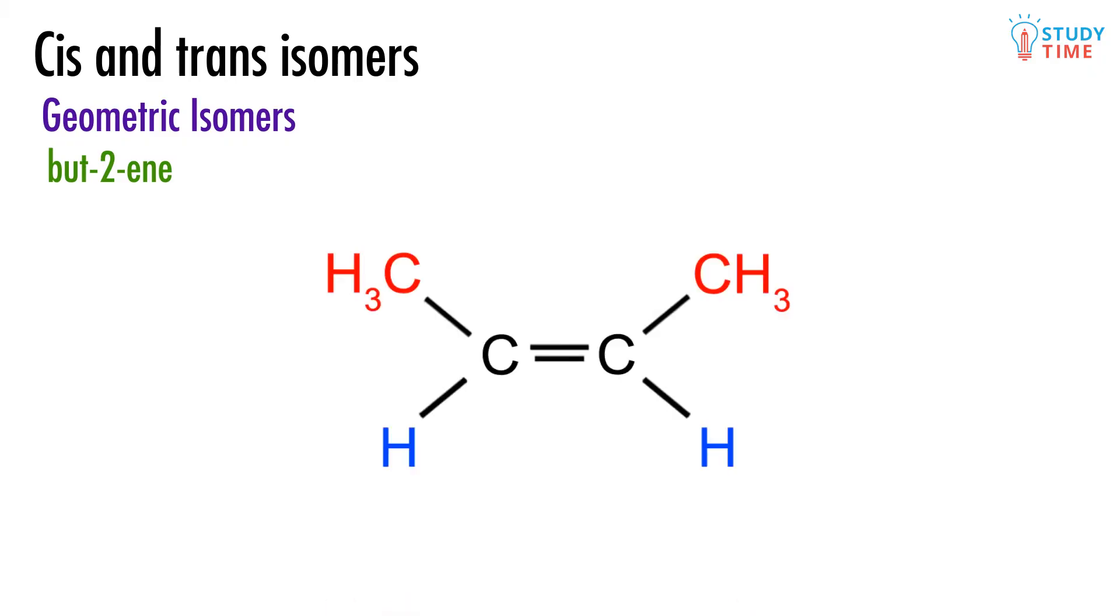One isomer cannot simply twist to become the other because there isn't free rotation about the double bond. Here's the first way we're going to draw but-2-ene. What is it that you're supposed to be seeing here? Well, we've drawn this with the double bonded carbons in the middle for a very specific reason. When we draw the molecule like this, it's very easy to see how each of those central carbons has two different groups coming off it. There's those two CH3 molecules, and then there's the hydrogen.